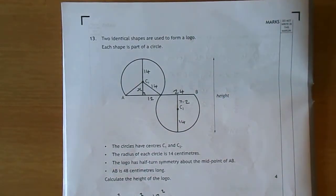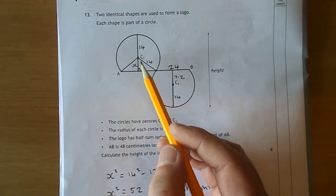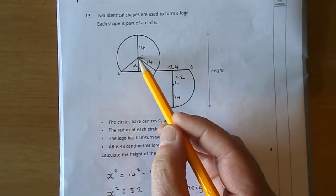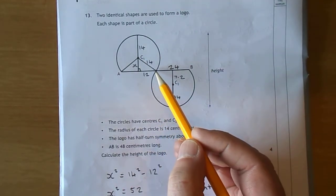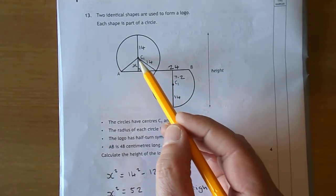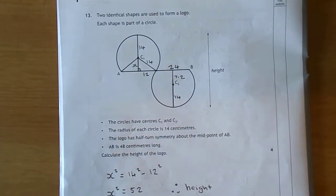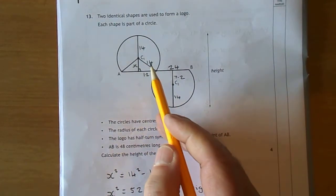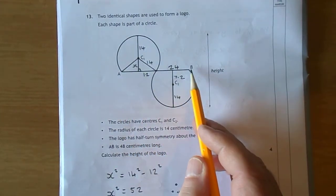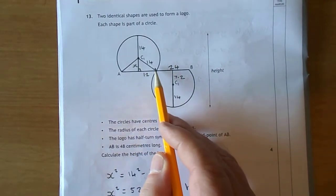The radius of each circle is 14 centimeters. I've drawn a line from there to there and a line down, making a right-angle triangle. So that's 14. Where did the 12 come from? From there to there is 48, so half of 48 gives us 24 on each side, and half of 24 gives us 12.